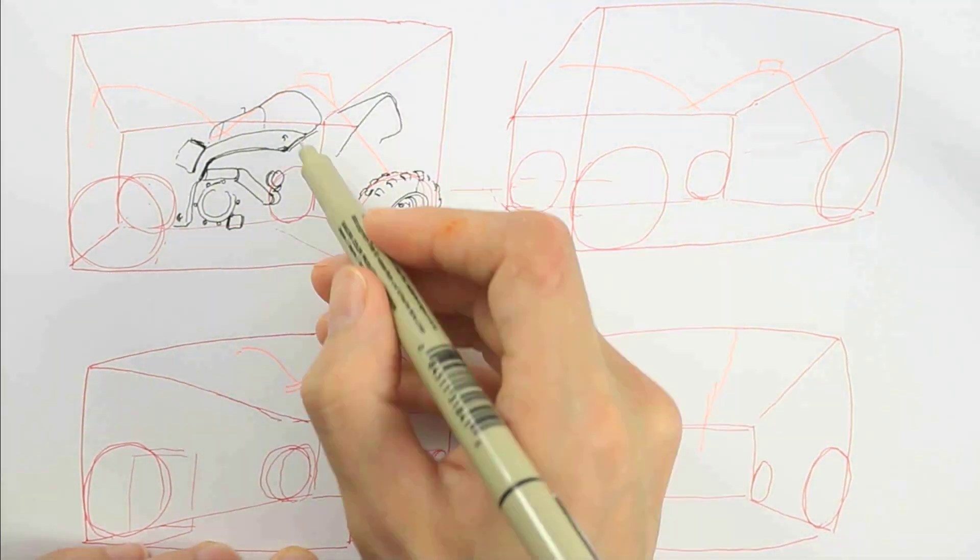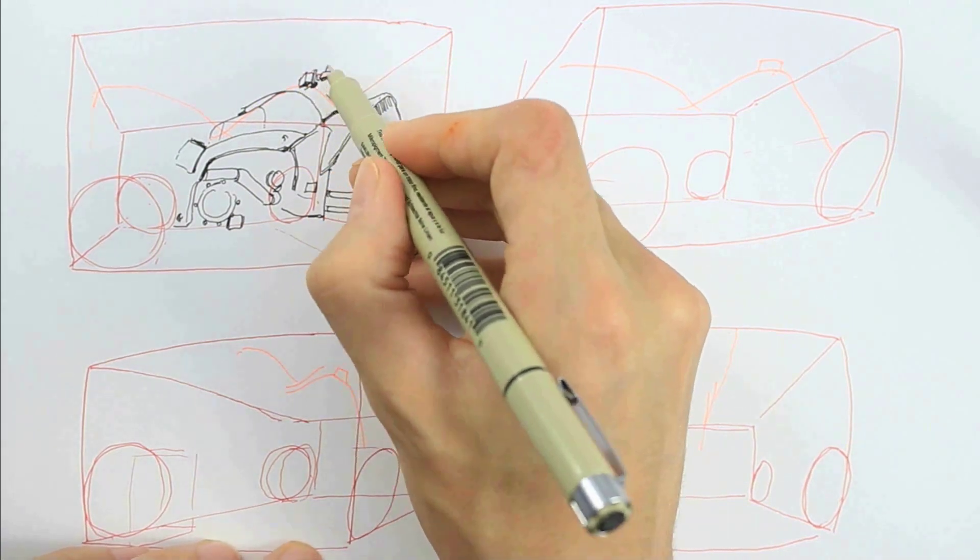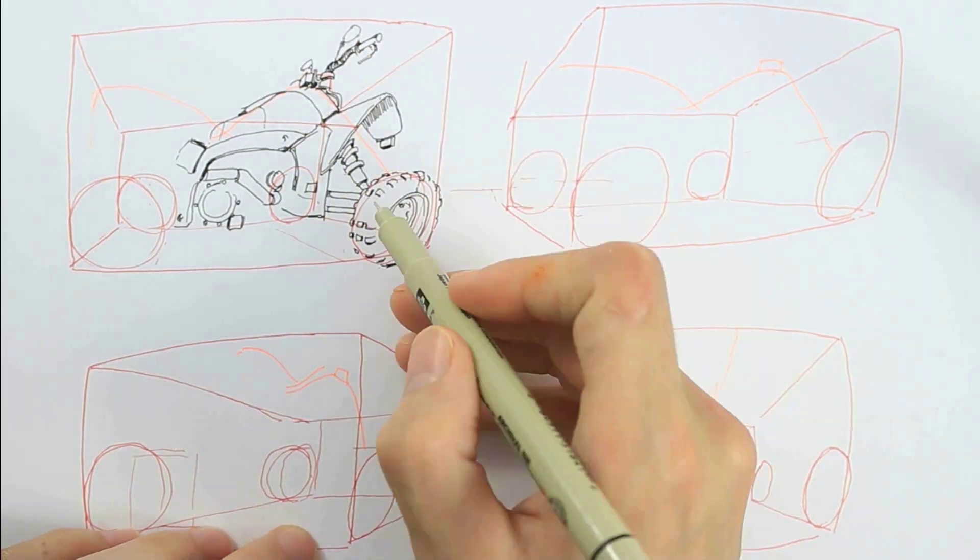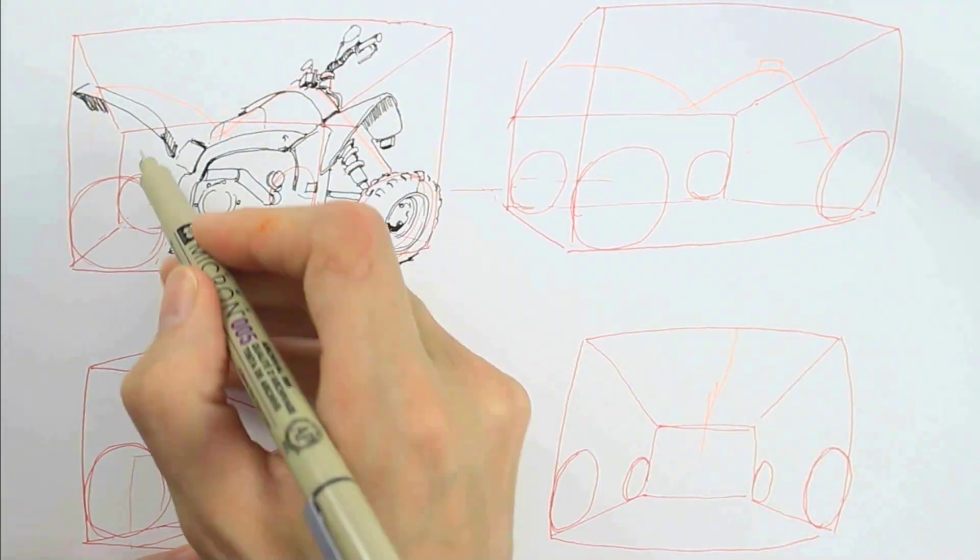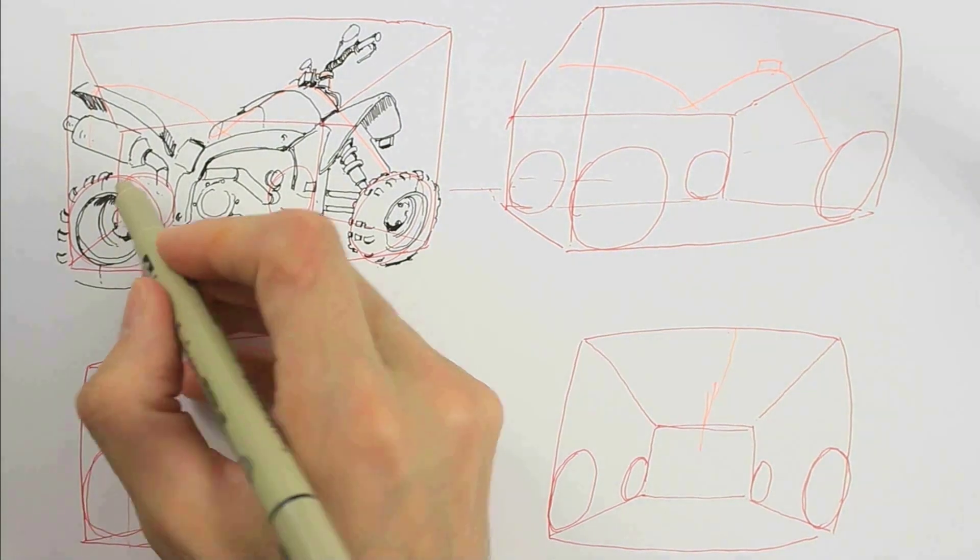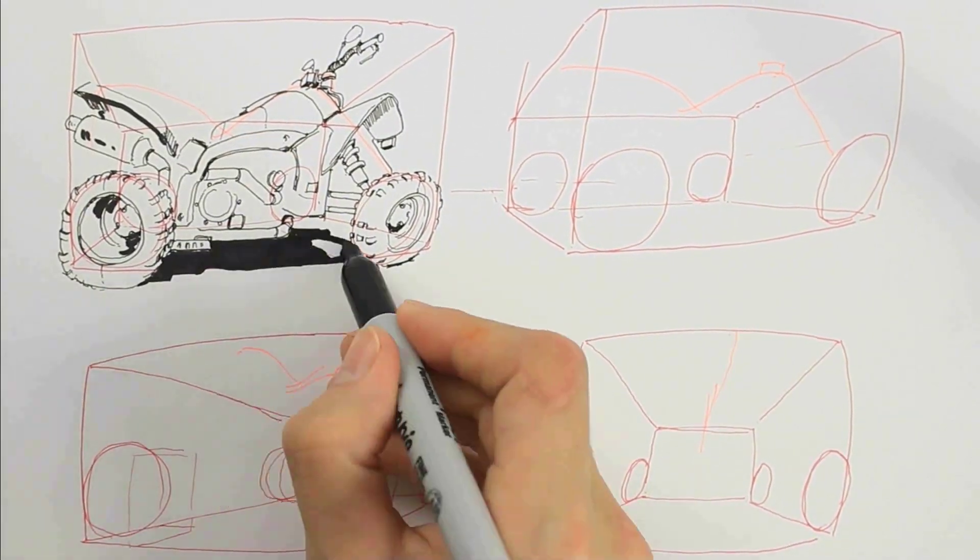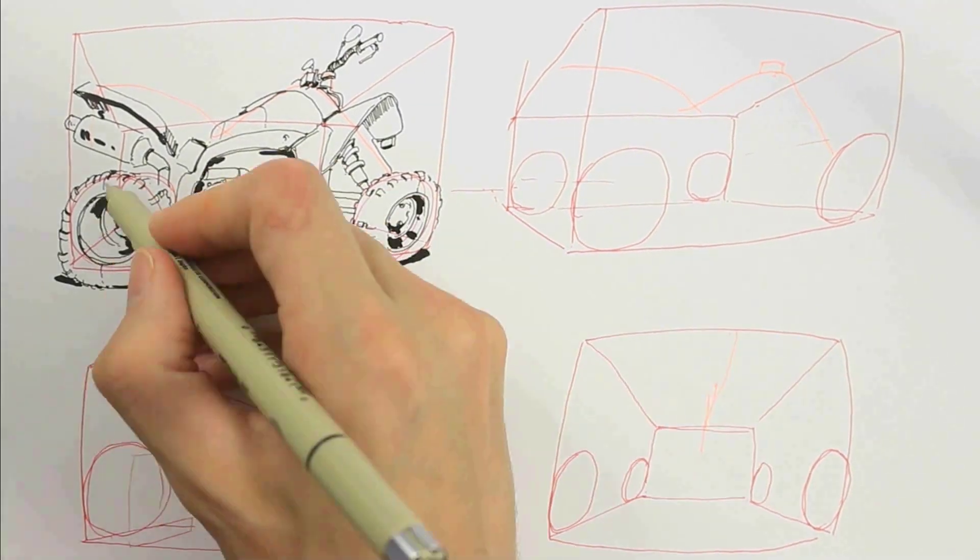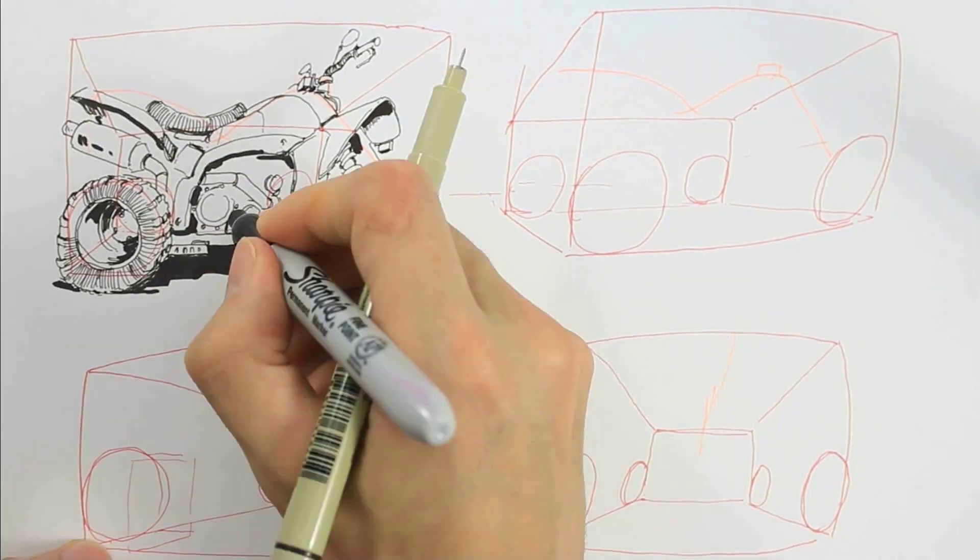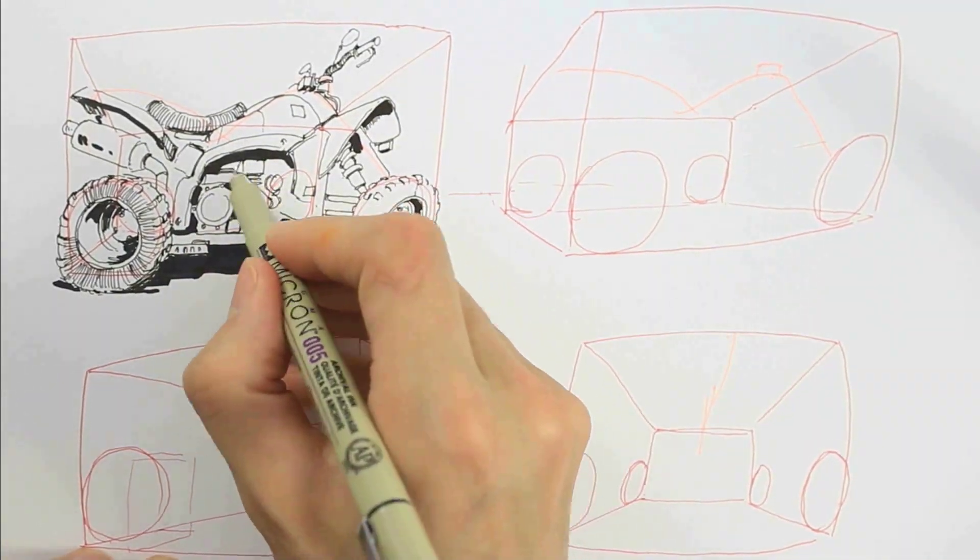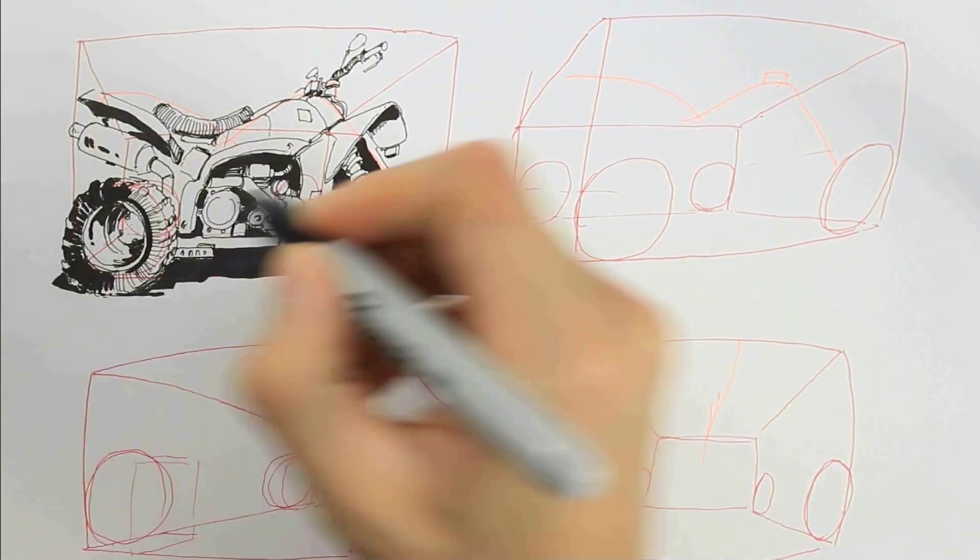And now I fill in the details and forms, following along with the perspective lines that I've created. Since we have a very low camera in relation to the quad, I add these heavy blacks underneath to show that we're looking up into it.